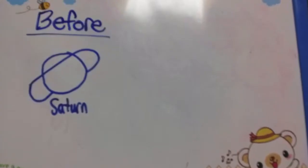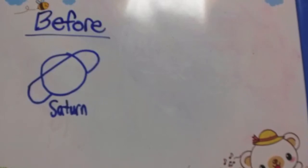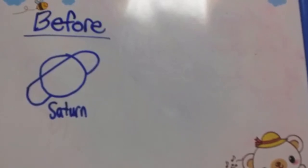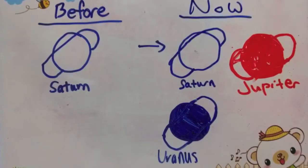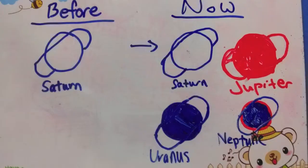Many, many years ago, lots of scientists were expecting for only Saturn to have a ring on it. However, recently, they have discovered that Neptune, Uranus, and Jupiter also had rings around it.